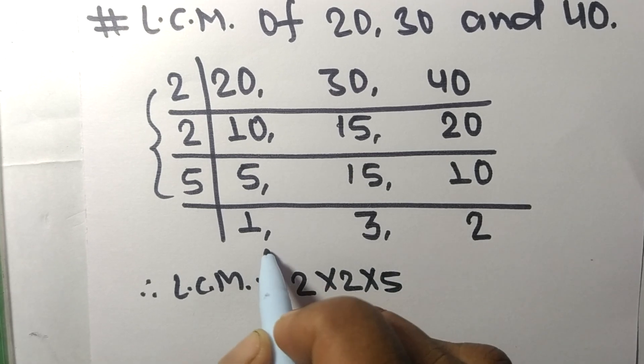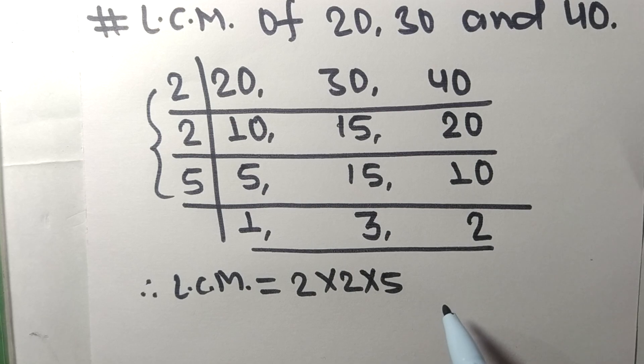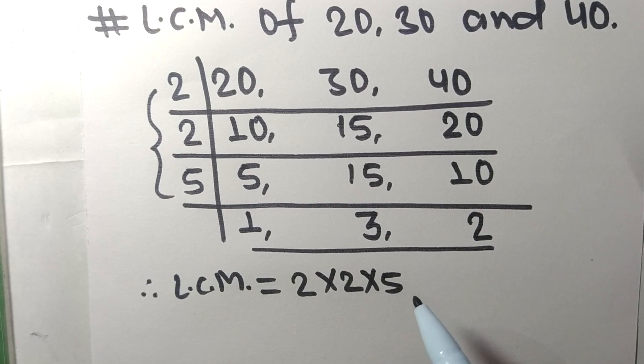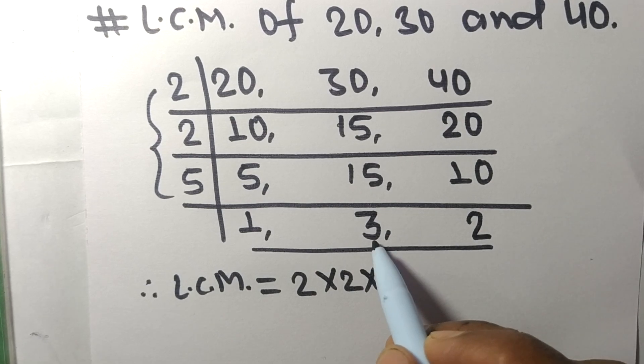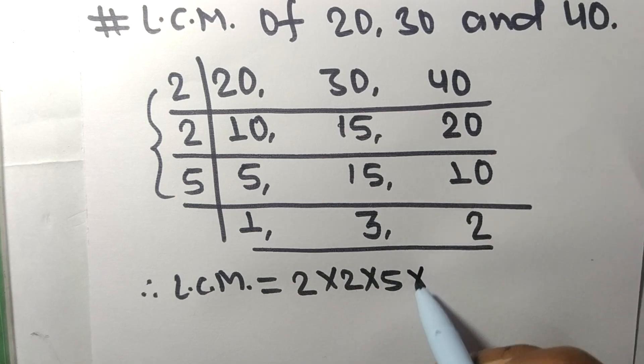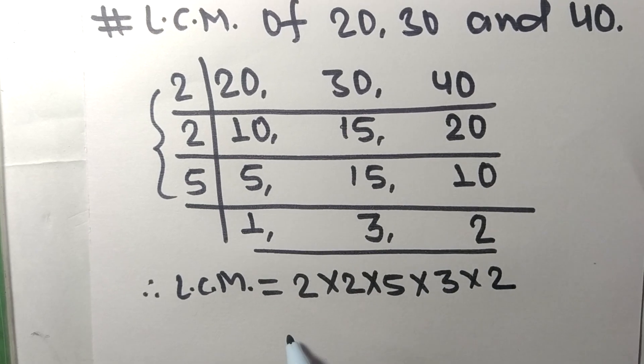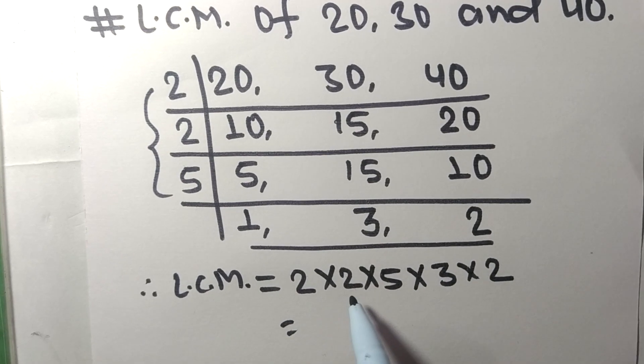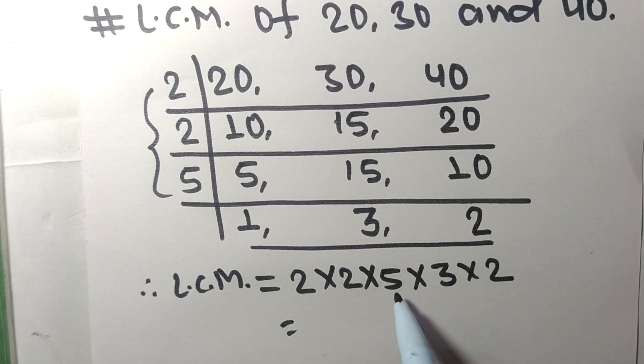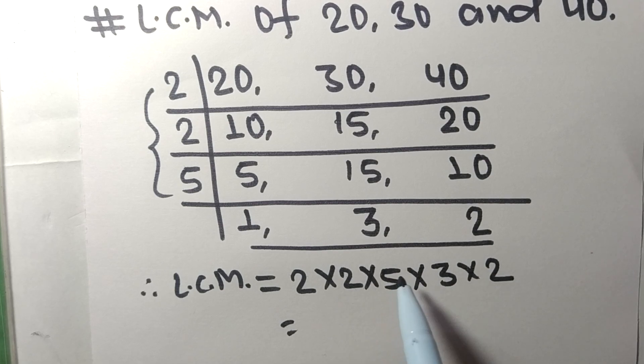So 2 times 2 means 4, 4 times 5 means 20, 20 times 3 means 60, 60 times 2 means 120. So by multiplying all these numbers we got 120. So 120 is the LCM of 20, 30, and 40.